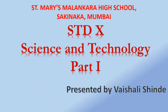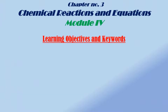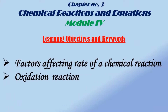Welcome students to the fourth module of Chemical Reactions. In this module, we will discuss various factors that affect the rate of a chemical reaction in detail. For example, we will see how the nature of the reactants, size of the particles of reactants, concentration of reactants, temperature of the reactants, etc. affects the rate of a chemical reaction. Also, we will discuss an important type of reaction — oxidation reactions — and various terms regarding it.